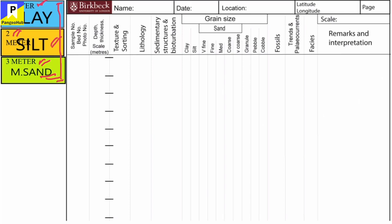On the header, we can note the location, the date, the name, the latitude and longitude, the page, the sample and bed number, and the photo number. Here comes the depth and thickness. The medium sand grain size of the lower bed has a thickness of 3 meters. If the scale is 1 to 100, then 3 meters means we have to represent it as 3 centimeters on the log.